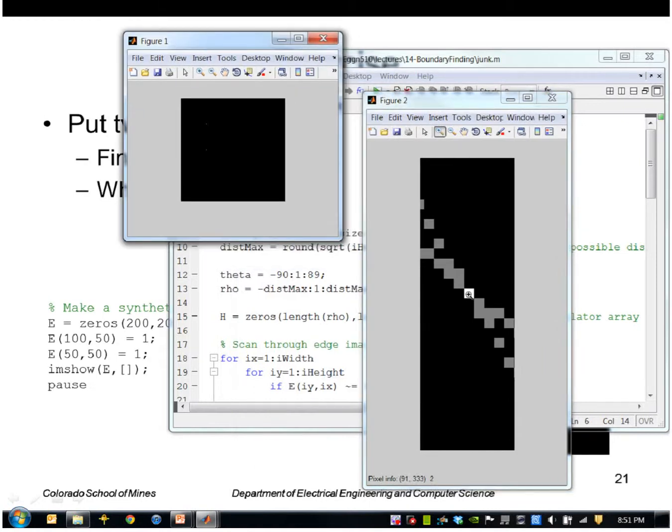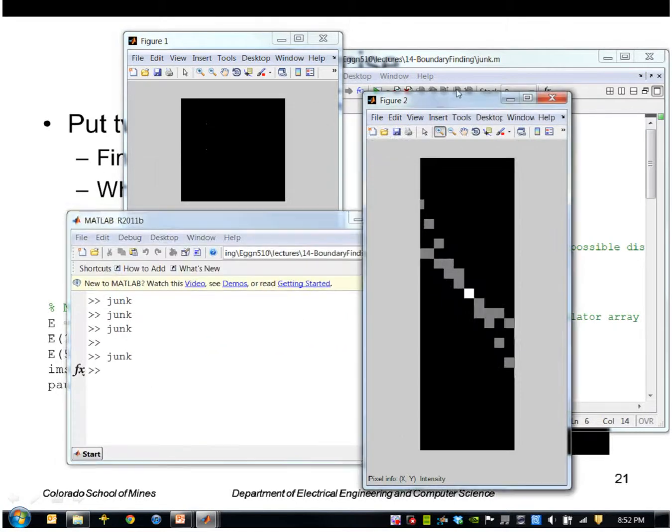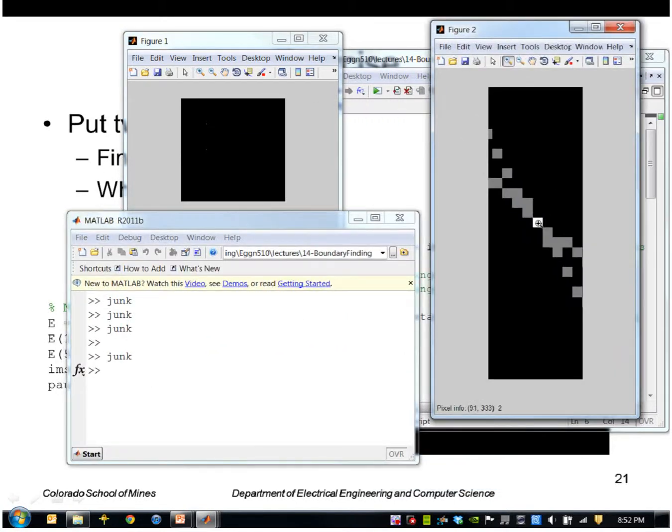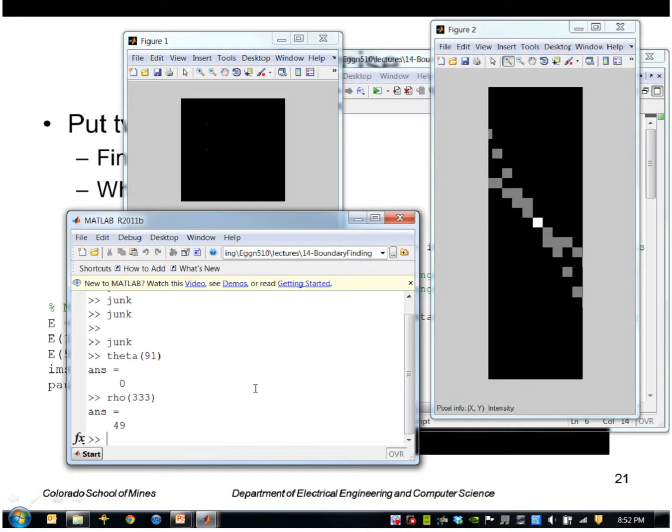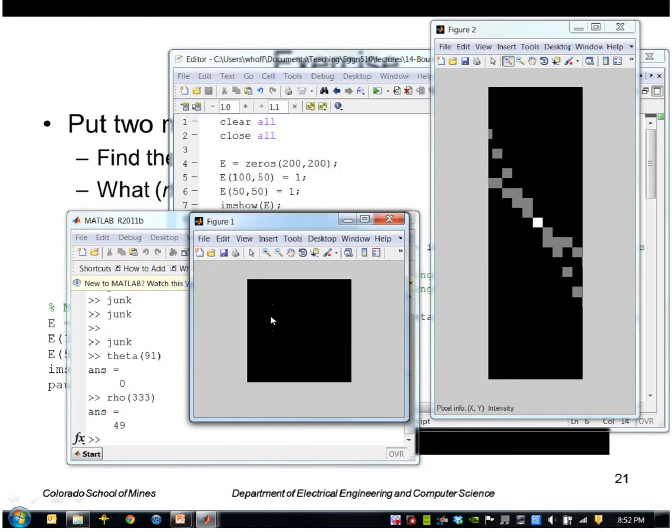So to find that out, we can simply take the coordinates of that, which is 91, 333. So it has a theta index of 91, which actually means an angle of zero. It has a row index of 333, which is a row value of 49. So basically we have a point, these two points, we have a vertical line, namely a theta of zero, that passes through them. And the perpendicular distance is 49 from the initial starting point here.